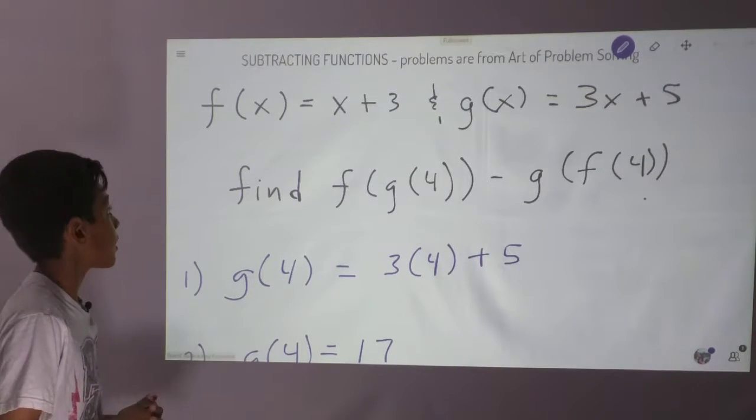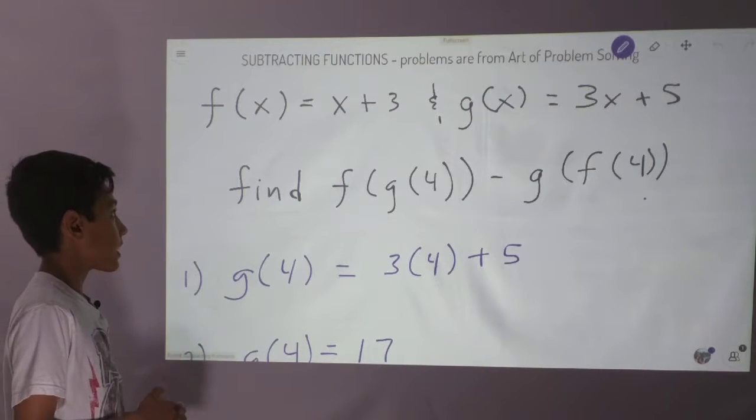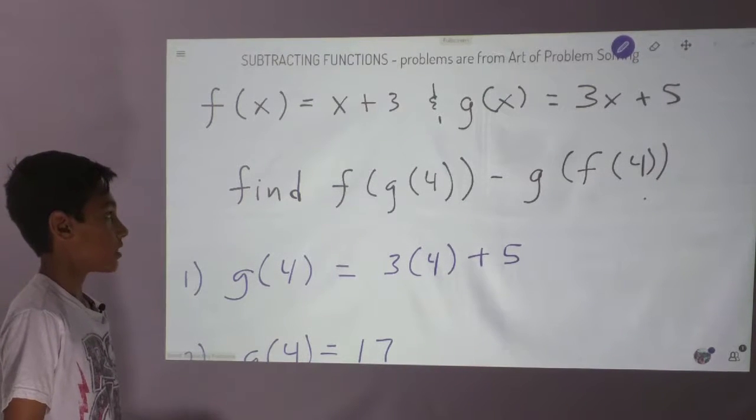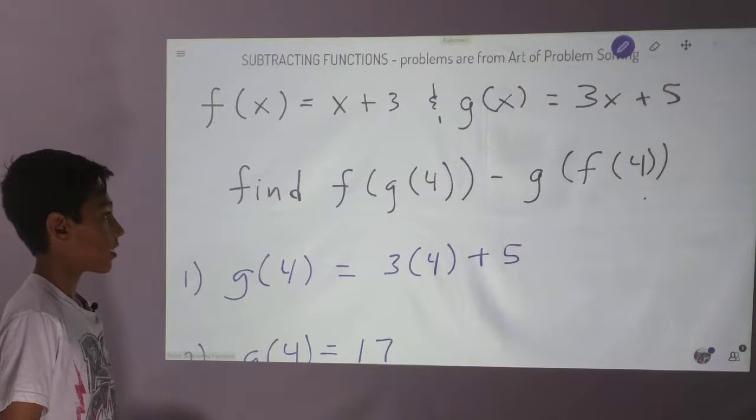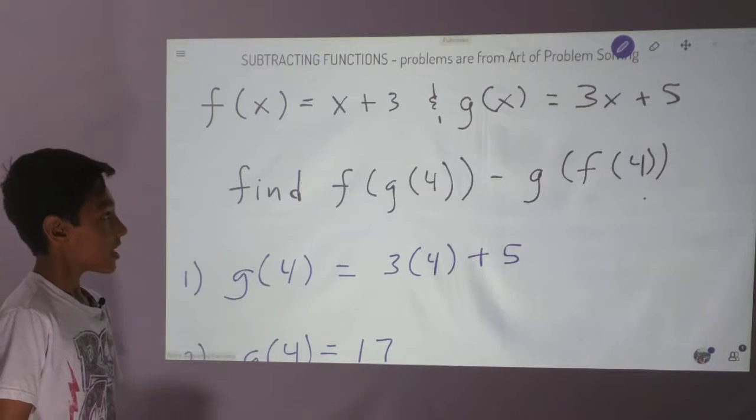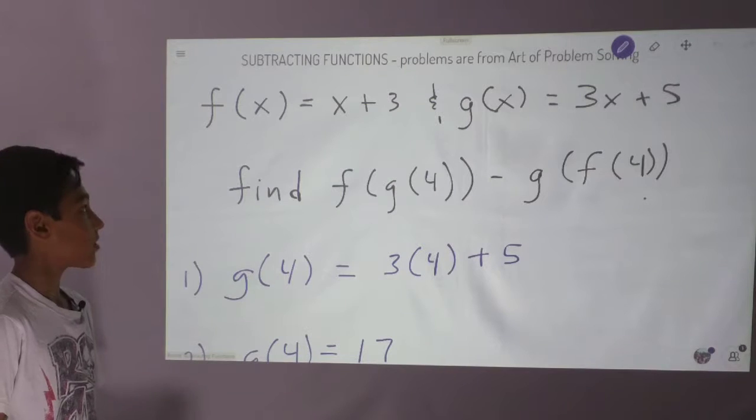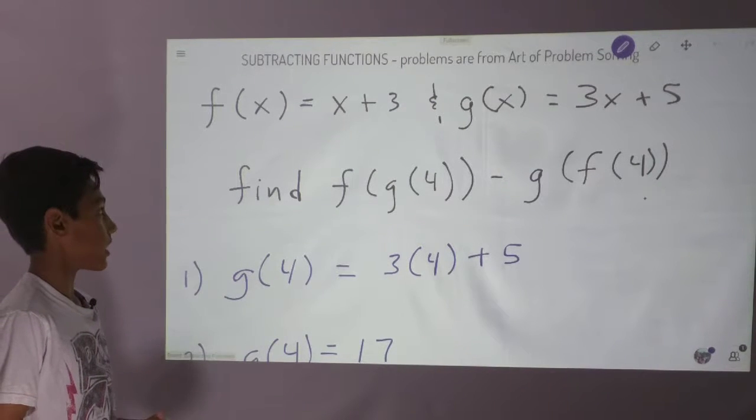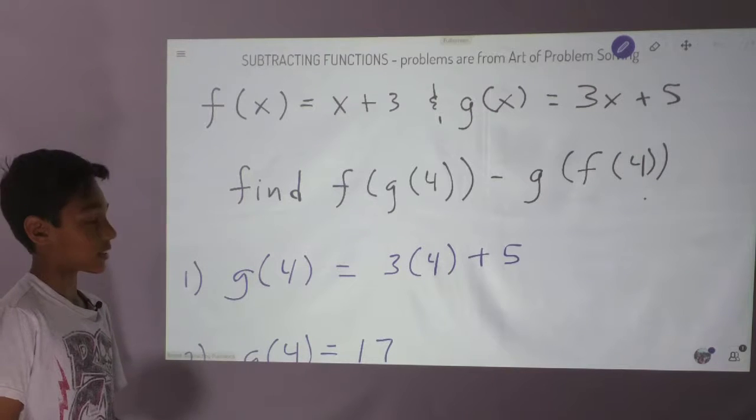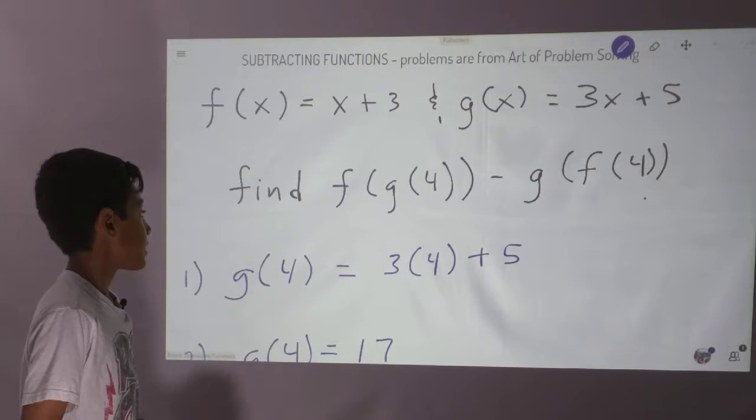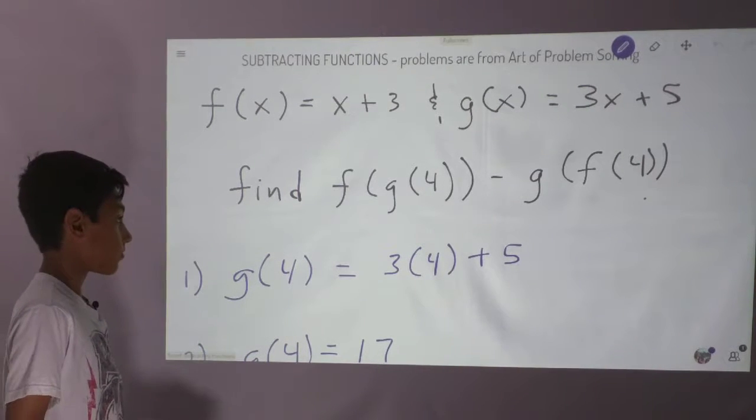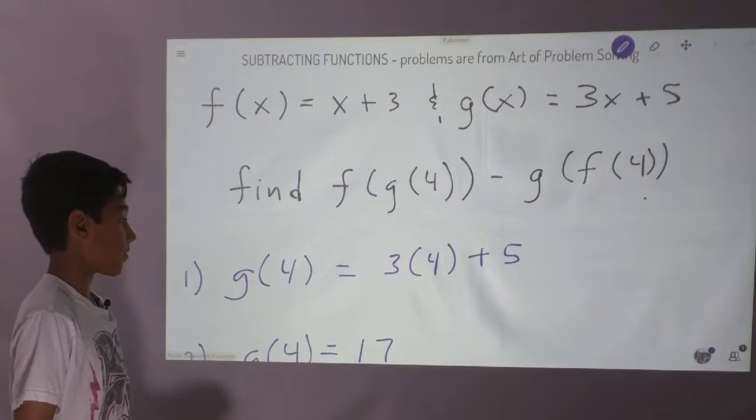So let's get started. f of x equals x plus 3 and g of x equals 3x plus 5. So find f of g of 4 minus g of f of 4.